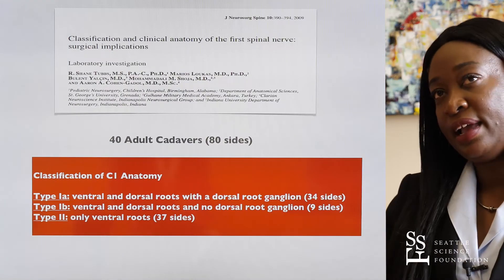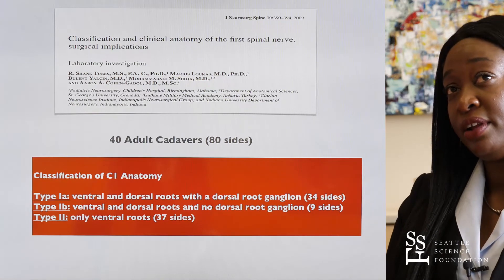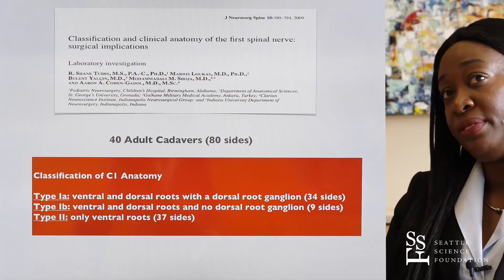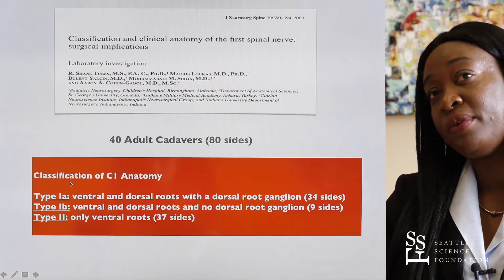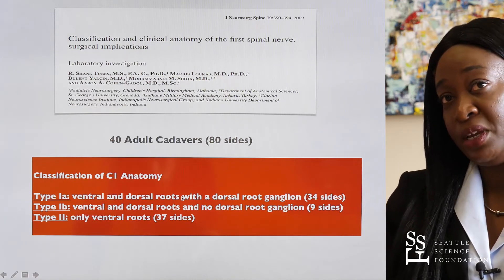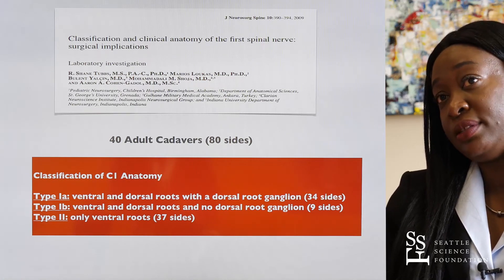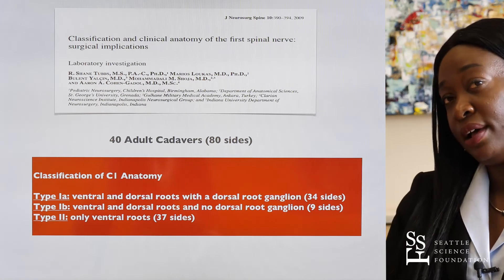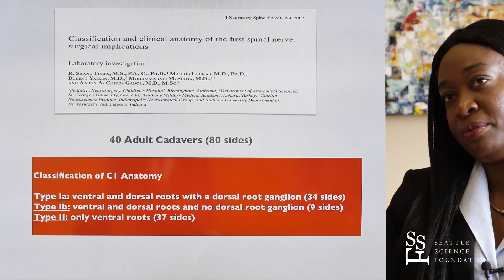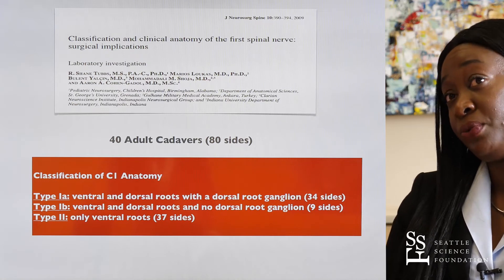However, studies do verify variations in the anatomy of the C1 nerve. Tubbs et al. used 40 cadavers, amounting to 80 sides, and classified C1 nerve anatomy into type one and type two. Type one had two components: type 1A, where 34 sides had a ventral and dorsal root with a dorsal root ganglion, and type 1B, where there were dorsal and ventral roots but no associated dorsal root ganglion, seen in only nine sides. The most common formation was type two, in which only a ventral root component was present.